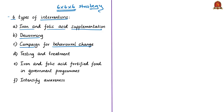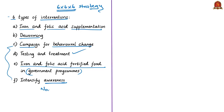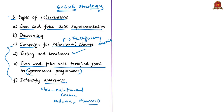Additional interventions include testing and treatment of anemia using digital methods; mandatory provision of iron and folic acid fortified foods in government-funded public health programs; and intensifying awareness, screening and treatment of non-nutritional causes of anemia in anemia-endemic pockets. Non-nutritional causes include malaria, fluorosis and other contributing factors.